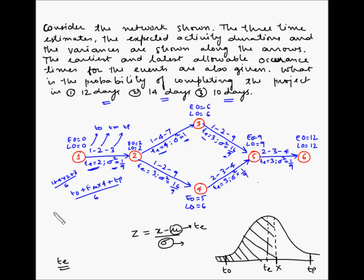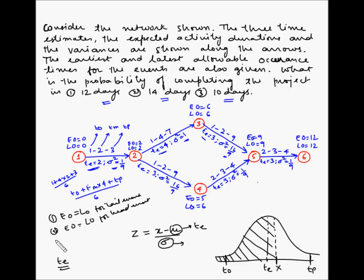One method uses three conditions: if all are satisfied, the activity is critical. Condition 1: EO equals LO for the tail event. Condition 2: EO equals LO for the head event. Condition 3: EJ minus EI should equal LJ minus LI, which should equal the expected duration Te of the activity. Let's use these conditions to identify each critical activity.